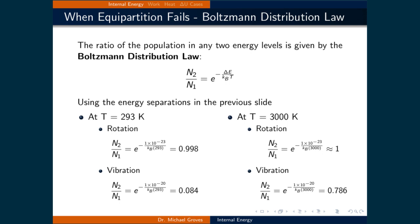This estimation is calculated using the Boltzmann distribution law, which states that the ratio of the population of two states N1 and N2 is equal to the exponential of the negative of the difference in energy of the two states divided by the Boltzmann constant times the temperature. For equipartition to hold, the states of all degrees of freedom must be reasonably equally occupied. At 293 Kelvin, a state and the next state above it are equally occupied since N2 divided by N1 is about 1. However, for vibrational states, this ratio is only about 0.084, meaning N2 is much less populated than N1.